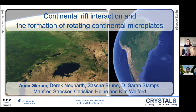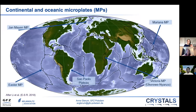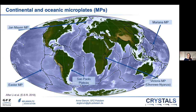I will demonstrate with two numerical studies what mechanisms are at play during microplate rotation and under which circumstances rotating continental microplates form. First, let's take a bit of a broader perspective. Microplates form in both the continental and the oceanic lithosphere and they are quite numerous and diverse, forming in many different tectonic settings like subduction and collisional, but during the talk I will focus on extensional settings only.